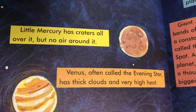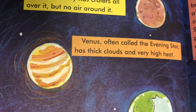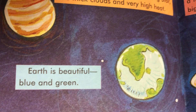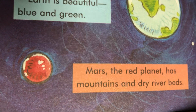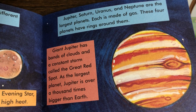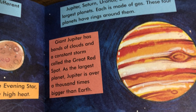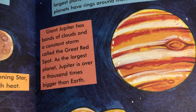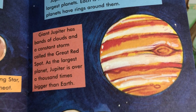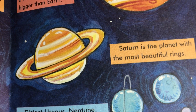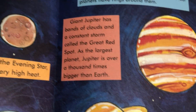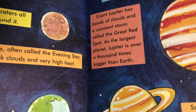Little Mercury has craters all over it but no air around it. Venus, often called the evening star, has thick clouds and very high heat. Earth is beautiful blue and green. Mars, the red planet, has mountains and dry river beds. Jupiter, Saturn, Uranus, and Neptune are the largest planets — each is made of gas, and these four planets have rings around them. Jupiter has bands of clouds and a constant storm called the Great Red Spot; as the largest planet, Jupiter is over a thousand times bigger than Earth. Saturn is the planet with the most beautiful rings. Distant Uranus, Neptune, and Pluto are icy cold planets. Which is your favorite planet, boys and girls?